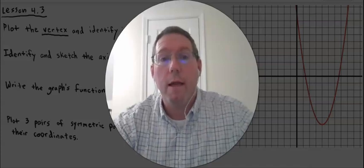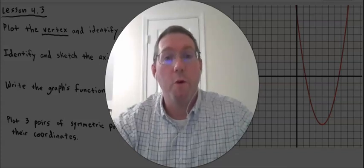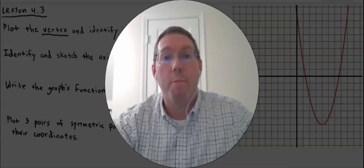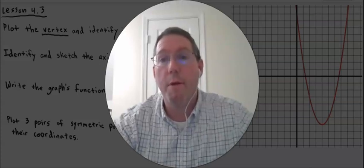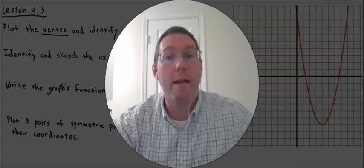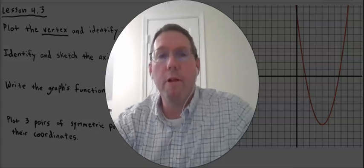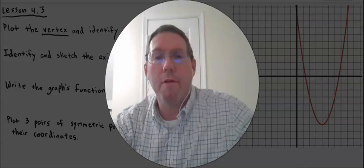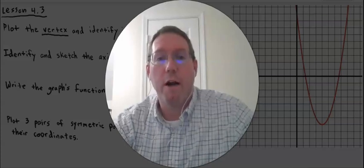We did learn previously that a quadratic function, when you graph it, has a shape like a U — it's called a parabola. It could be upside down if it's negative. So we're going to learn a little bit more about this parabola shape and how to graph a quadratic function.